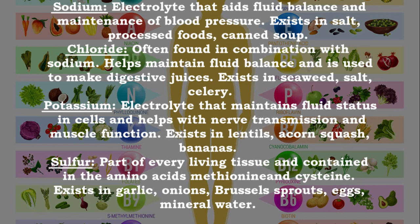Chloride — often found in combination with sodium, helps maintain fluid balance and is used to make digestive juices; found in seaweed, salt, and celery. Potassium — an electrolyte that maintains fluid status in cells and helps with nerve transmission and muscle function; found in lentils, green beans, acorn squash, and bananas. Sulfur — part of every living tissue and contained in the amino acids methionine and cysteine; found in garlic, onions, Brussels sprouts, and eggs.